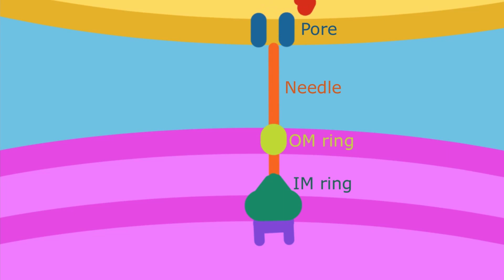Once the effector protein enters the target cell, it can have its intended effect.